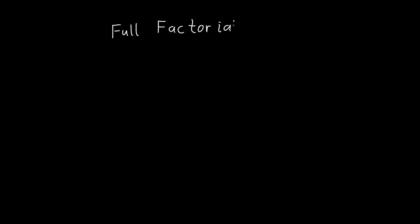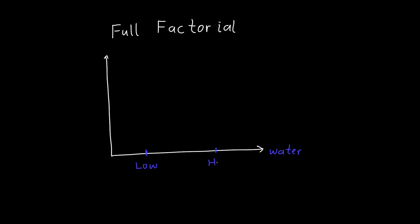An alternative is the full factorial experiment. Instead of changing one thing at a time, we try all possible combinations of our different variables. On the x-axis we have the amount of water — a low amount and a high amount. On the y-axis we have the amount of sunlight — a low amount and a high amount. We then carry out all four different experiments, represented here as dots.